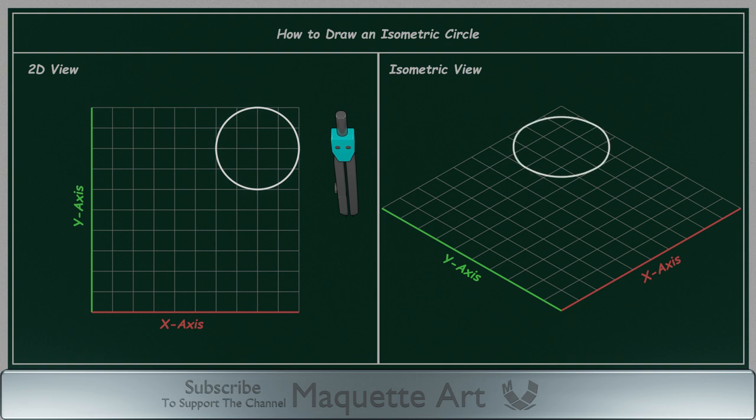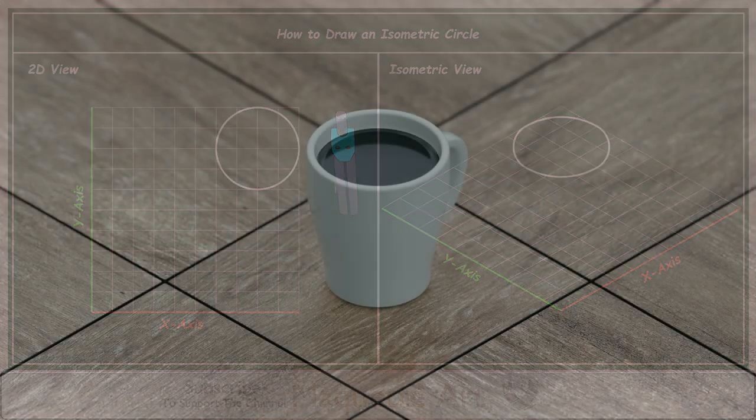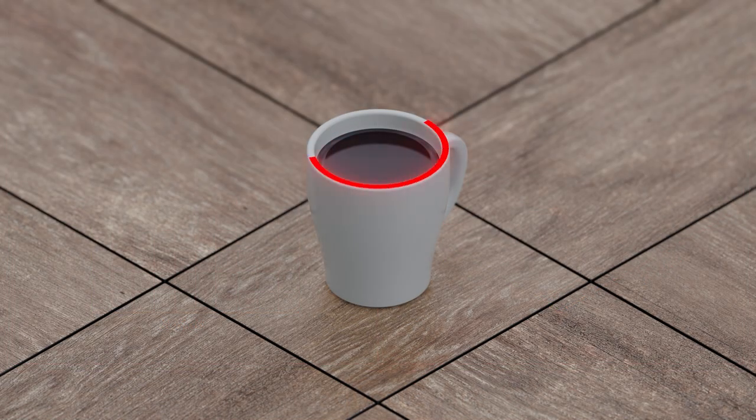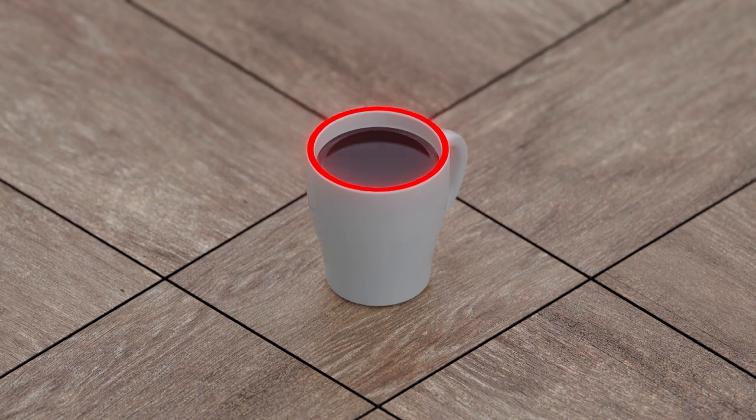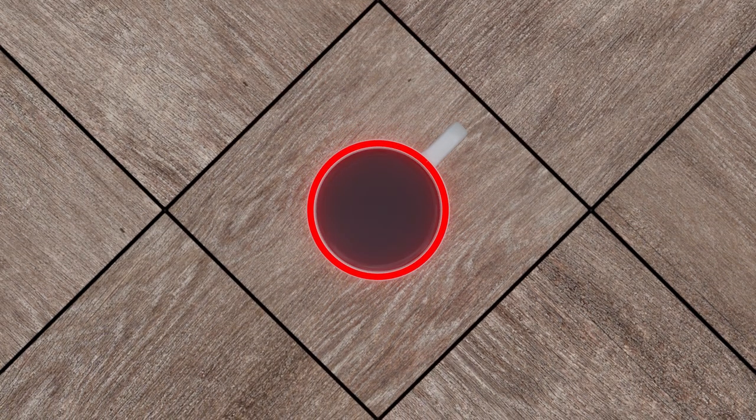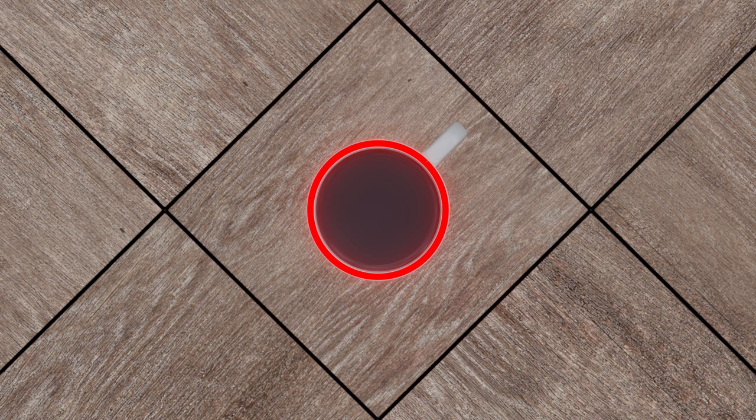To better understand why it looks like an ellipse, when you look at a cup of coffee, for example, you can see that the top of the cup is an ellipse shape. But if you look at the same cup from a top view, you can see it as a circle, but you can't see the height of the cup.